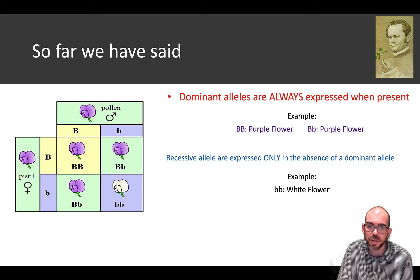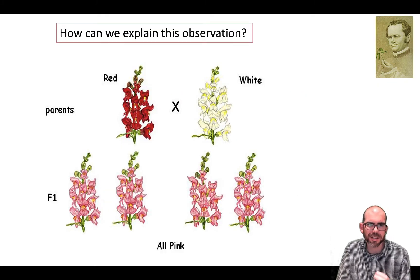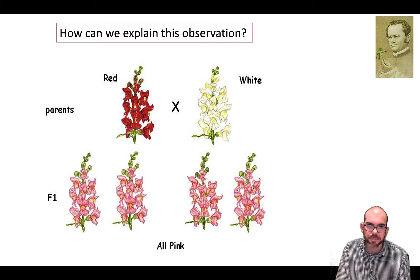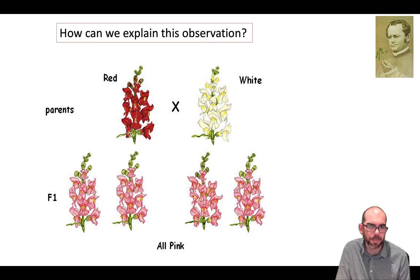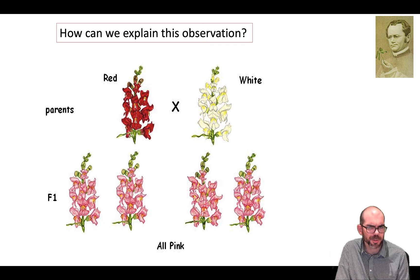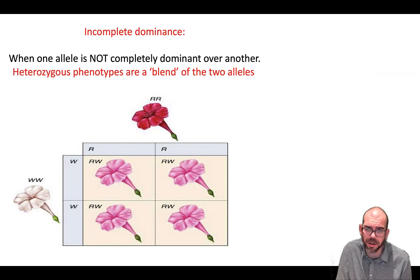These are the rules we assume for monohybrid and dihybrid crosses that we solved. But how do you explain this observation using those rules? Here you can see a red plant and a white plant cross produced all pink progeny — all pink offspring. So, which one's dominant and which one's recessive? That model doesn't work here.